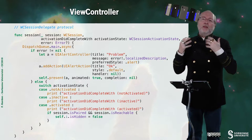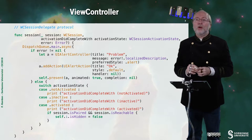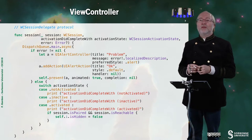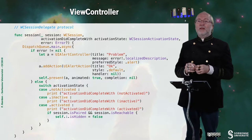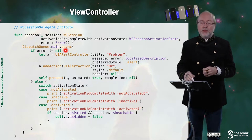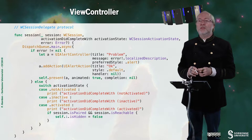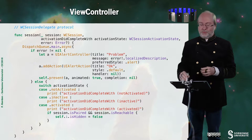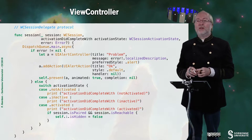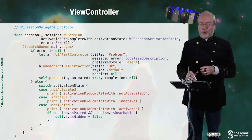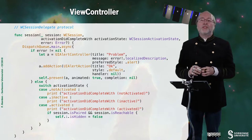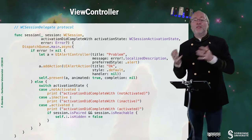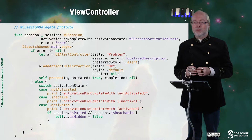This is the WCSession delegate protocol. The session states that the activation did complete. I have to put that on the main queue. If an error is notified, then I display this error and present it. Otherwise, I check for the states — and typically, the session can be available but there is no paired watch with my device.